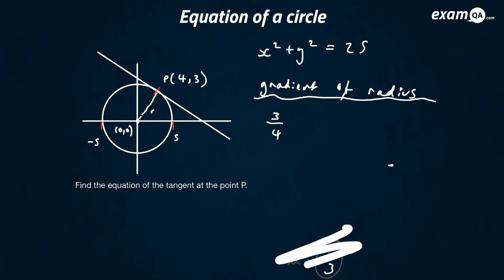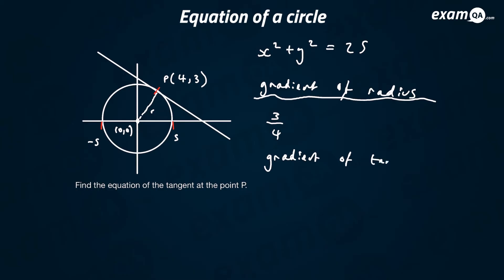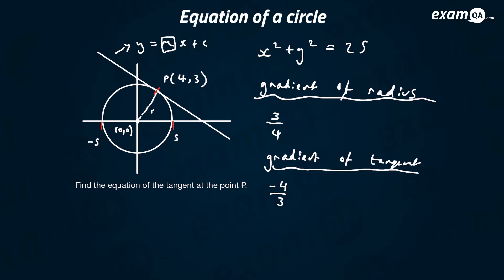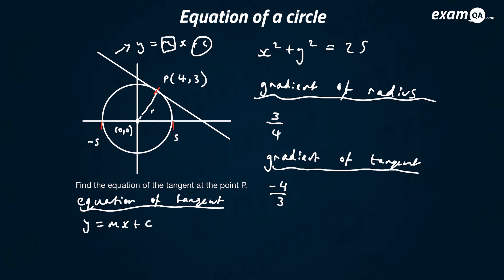We've got the gradient of the radius as 3 over 4, so we can now work out the gradient of the tangent. The gradient of the tangent is minus 4 over 3. We wanted y equals mx plus c, and we've worked out m. So I'll write y equals minus 4 over 3 x plus c.